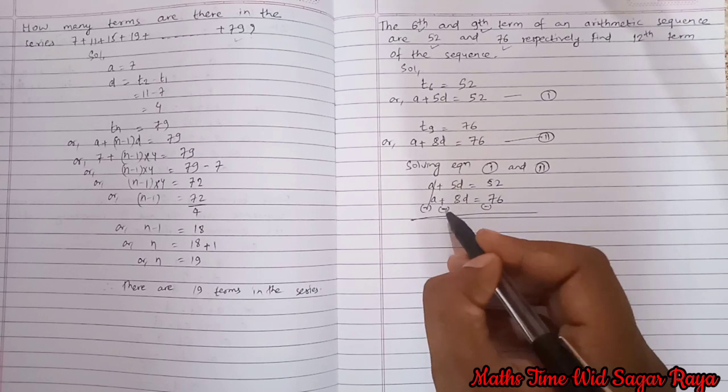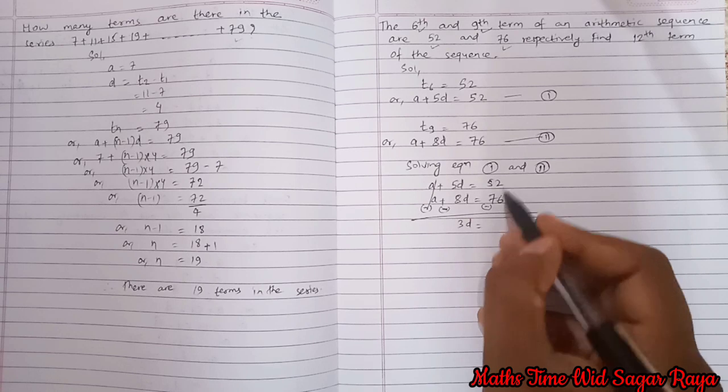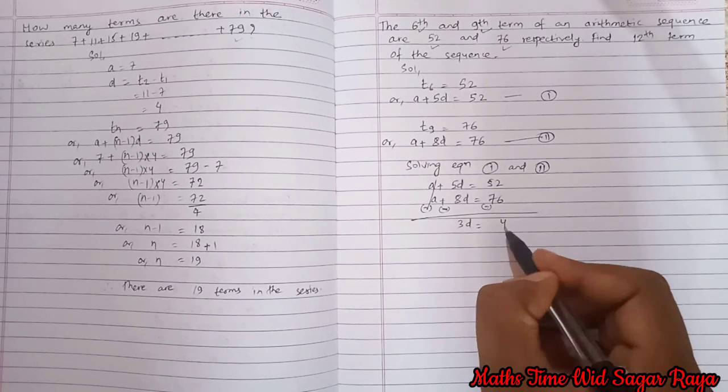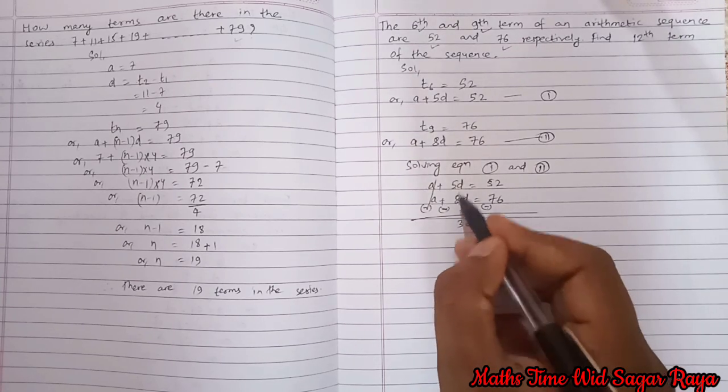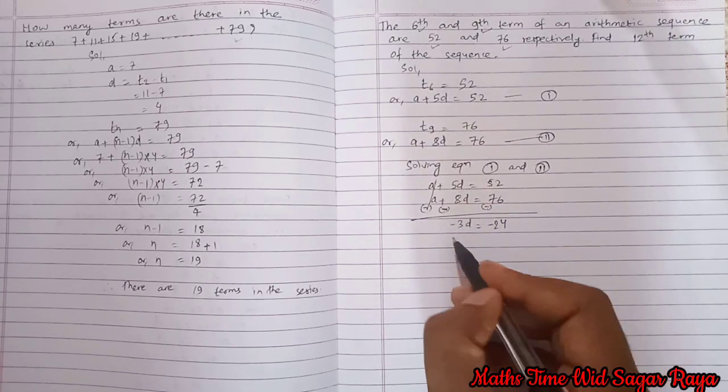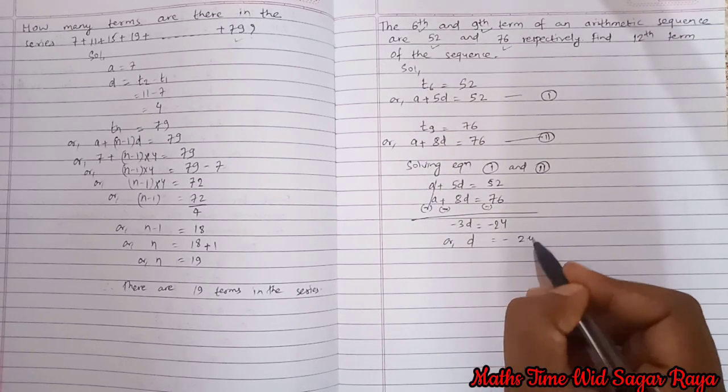Now 8d it was positive, now its sign is minus, so 5d minus 8d it will be minus 3d. So 52 minus 76, it will be minus 24. And here also 5d minus 8d, it will be minus 3d.